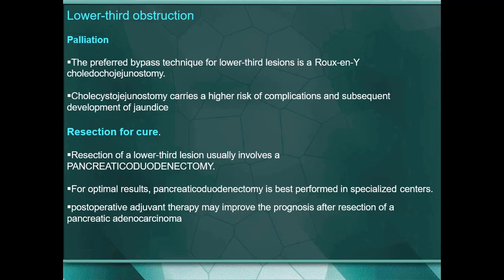For lower third obstruction palliation: the preferred bypass technique is Roux-en-Y choledochojejunostomy. Cholecystojejunostomy can also be done but carries a high risk of complications and subsequent development of jaundice. If you want to cure the patient and the tumor is resectable, the most important operation is Whipple's operation — that is pancreaticoduodenectomy. Resection of lower third lesions usually involves pancreaticoduodenectomy, which is best performed in specialized centers.